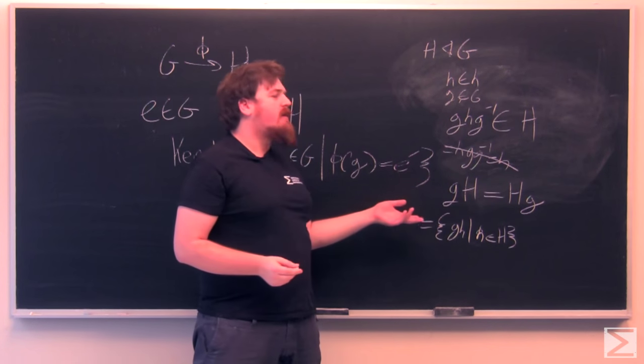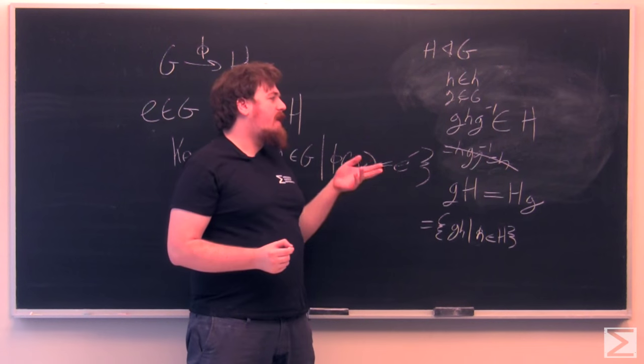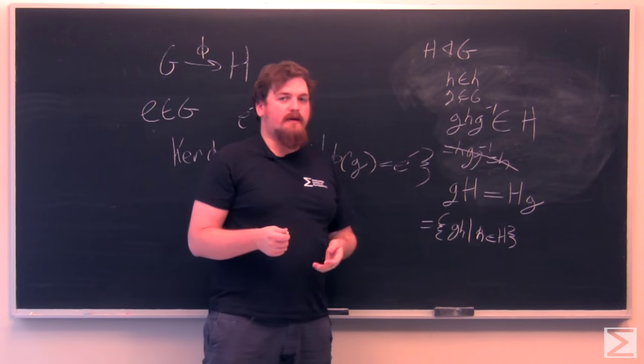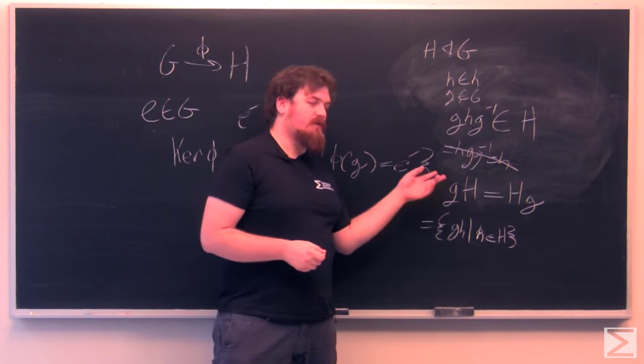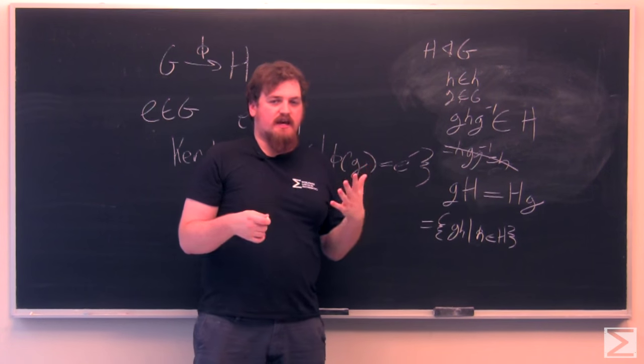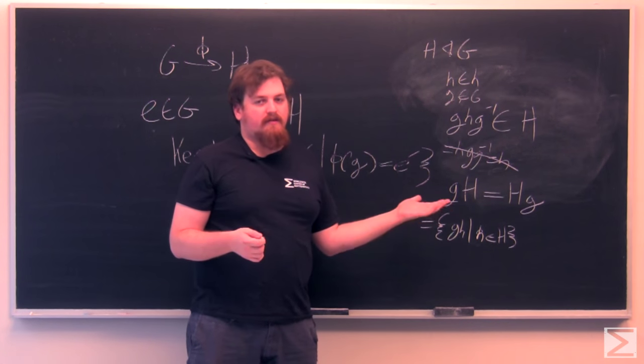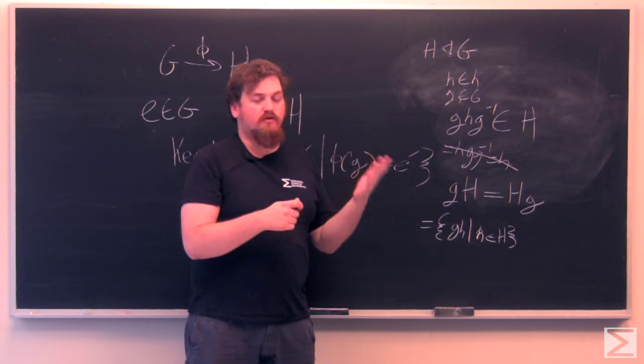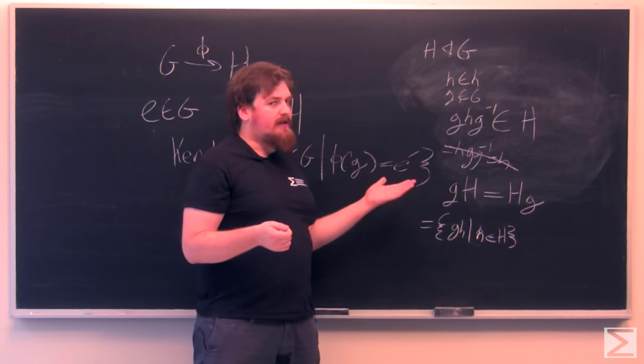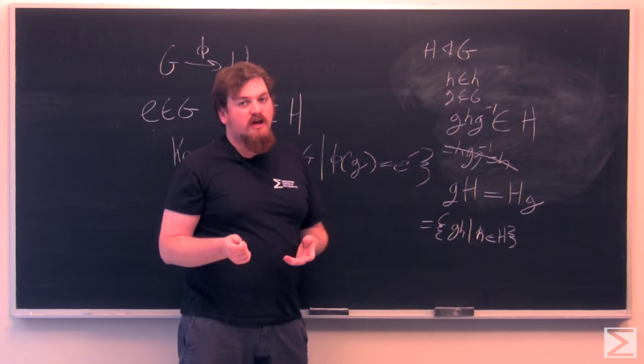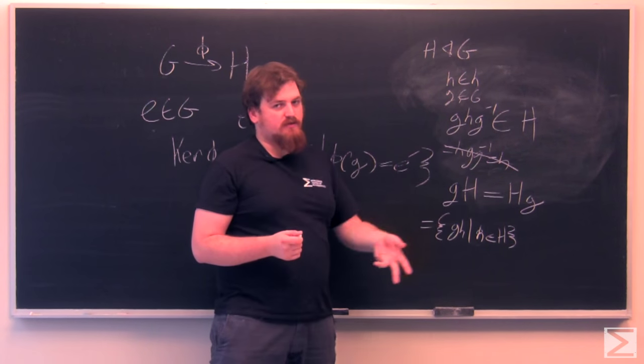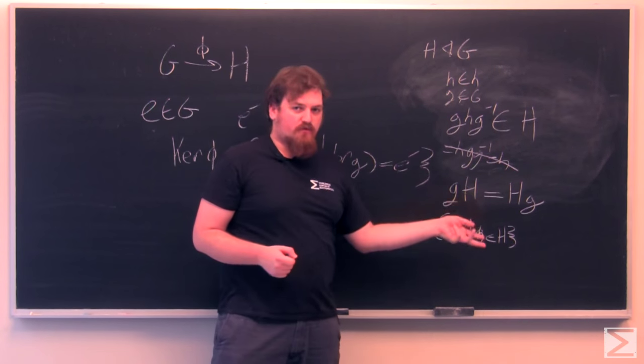This means that H times itself, the set of all products of two elements of H, that's going to be H itself again because H is closed. So this means that H times H is equal to H, and H commutes with every element of G.